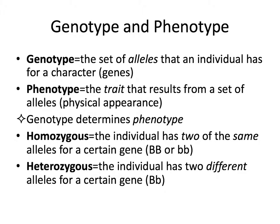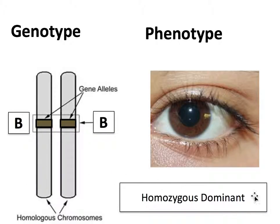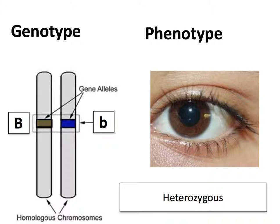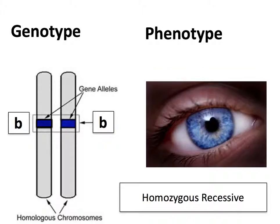A person who is homozygous dominant has two dominant alleles — both carry information for brown eye color — so their genotype is BB and their phenotype is brown eyes. A heterozygous person has one brown-eye allele and one blue allele; using simple dominance, brown eye color wins and masks the blue, so they also have brown eyes. In the third example, a homozygous recessive individual has two lowercase b's, and this individual will express the blue eye trait.